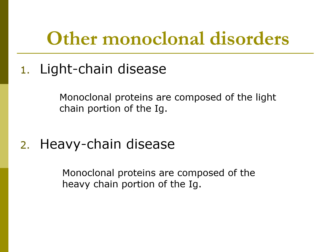Light chain diseases represent about 10 to 15% of all monoclonal gammopathies. Monoclonal proteins are composed of the light chain portion of the immunoglobulin class, and many light chain fragments are produced. In heavy chain disease, many heavy chain fragments are produced, and monoclonal proteins are composed of the heavy chain portion of the immunoglobulin. Monoclonal gammopathies are treated with steroids and chemotherapy.